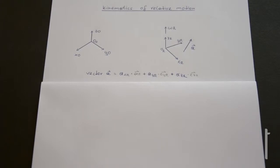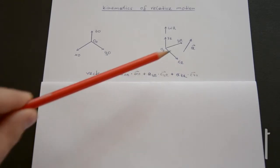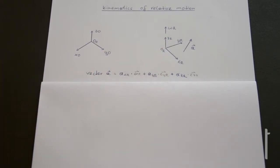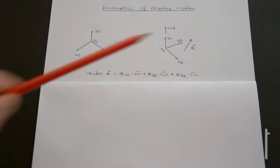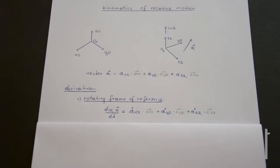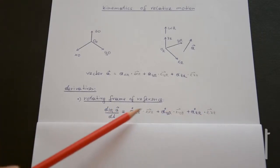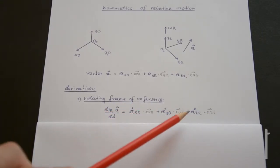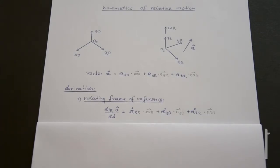What happens if we derive this vector with respect to time? First we have to figure out which frame of reference to use — we have two options. We can derive this vector with respect to the rotating frame of reference, or we can derive it with respect to the inertial frame of reference. If you derive the vector with respect to the rotating frame of reference, the direction stays the same and just the scalar quantities get a dot over them. But what happens if you derive the vector using the inertial frame of reference? Here we have to pay attention to the fact that the moving frame of reference is in motion compared to the inertial frame of reference.